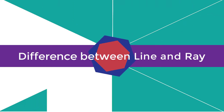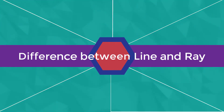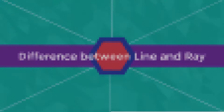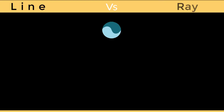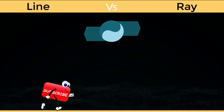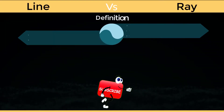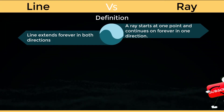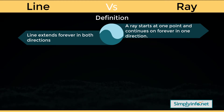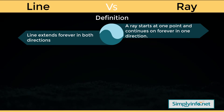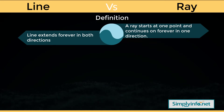Difference between Line and Ray. A line extends forever in both directions. A ray starts at one point and continues on forever in one direction.